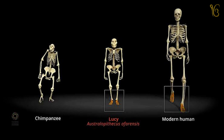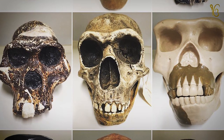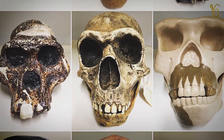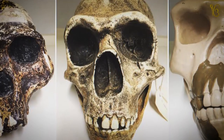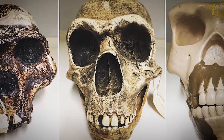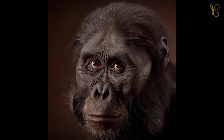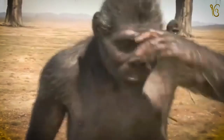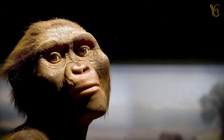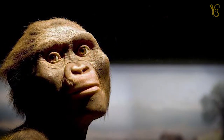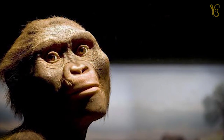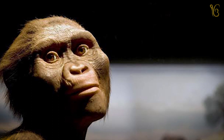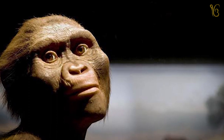Human skeletons from different places found in the world are classified into different categories. The first category of man was called Australopithecus, found only in Africa. They are believed to be our earliest ancestors. A female skeleton named Lucy was found here, which was called Mother of Man.